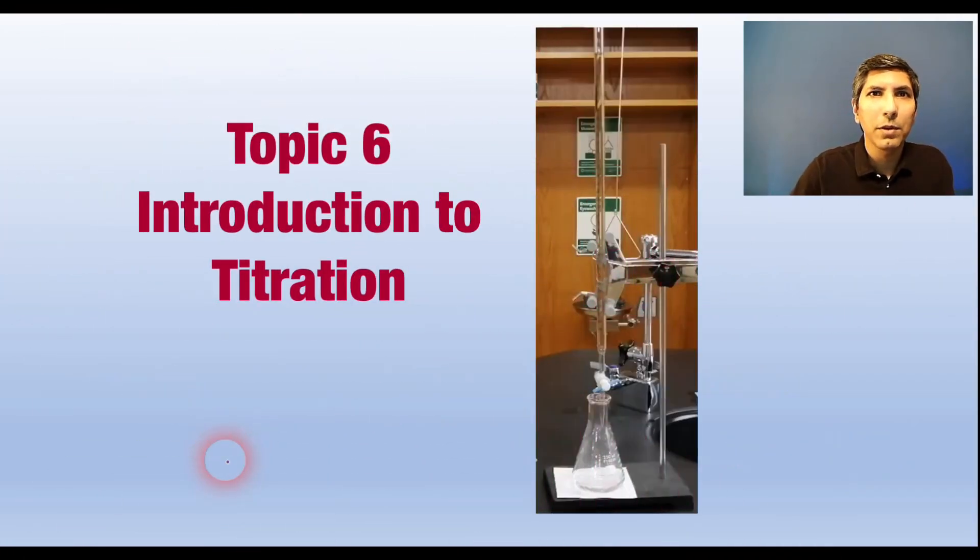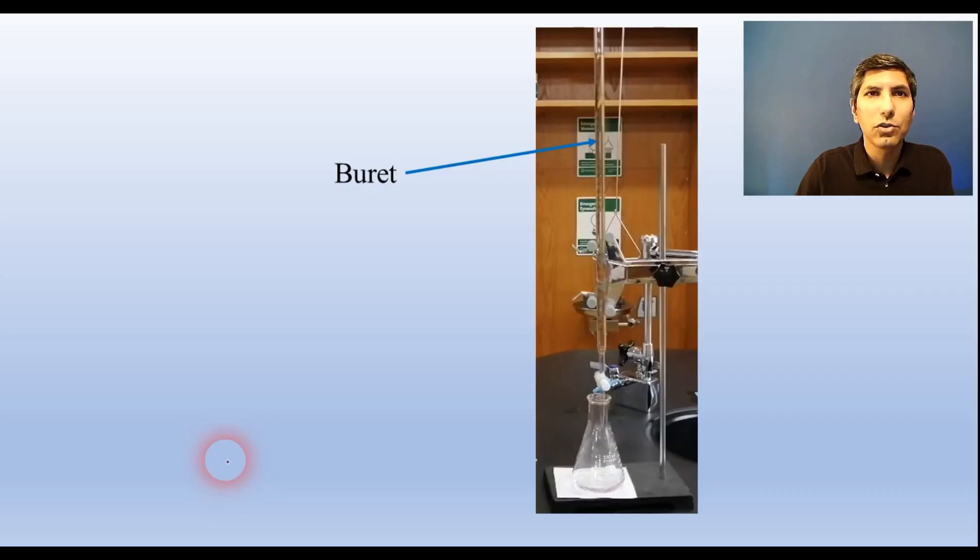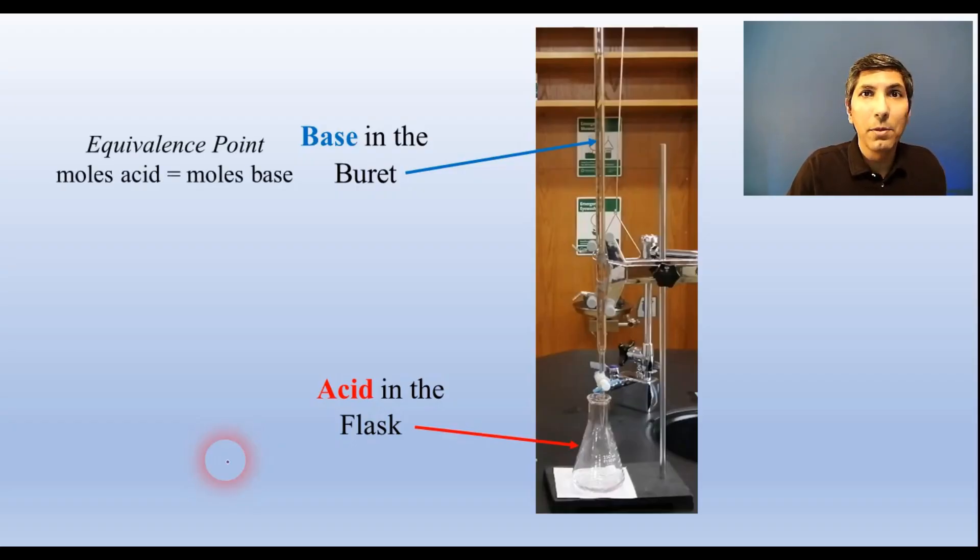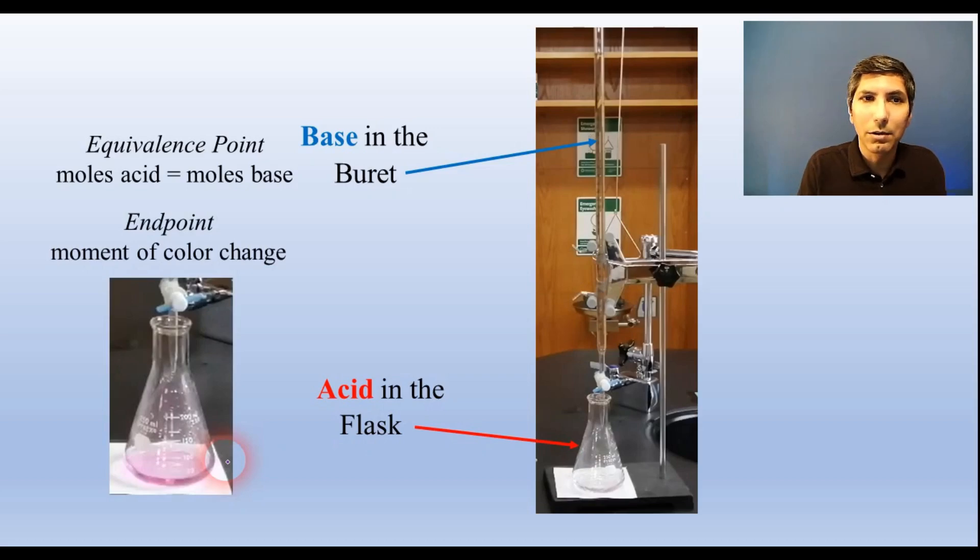Titrations are laboratory experiments where we use a burette to slowly add a solution to a flask of a different solution. We keep adding the solution until something indicates a reaction has taken place. The most common form of titration in AP chemistry is the acid base titration. We usually place the base in the burette and the acid goes in the flask down below. And we use an acid base indicator to signal that the reaction is essentially complete. The exact moment where the moles of base that we've added from the burette is equal to the moles of acid present in the flask is called the equivalence point. The moment that the acid base indicator changes color is called the end point. If you're doing your job right, the end point will be very, very close to the equivalence point.